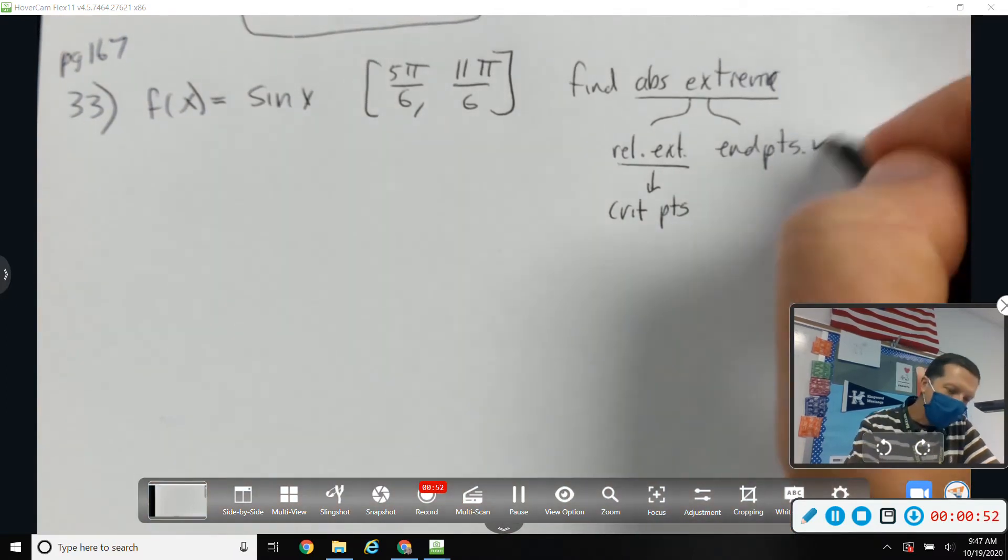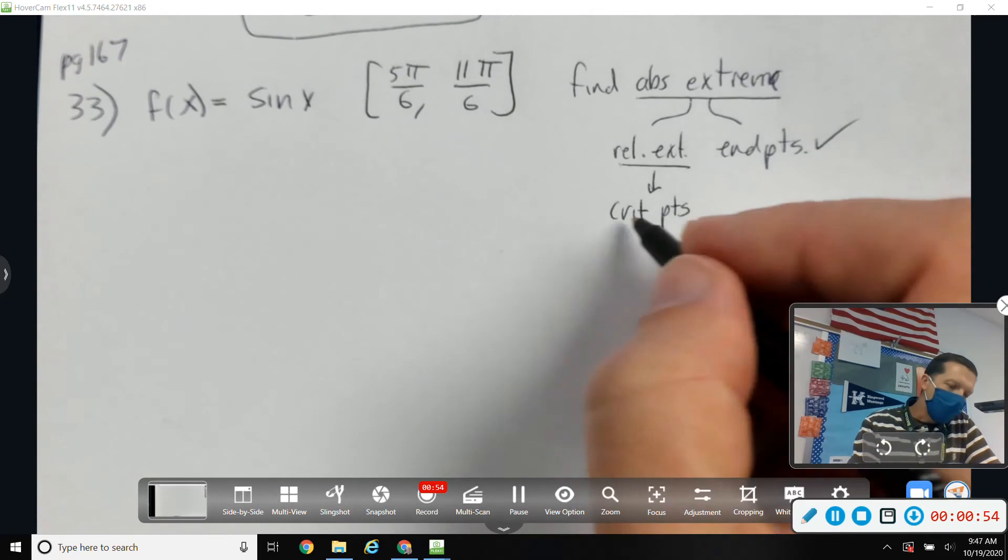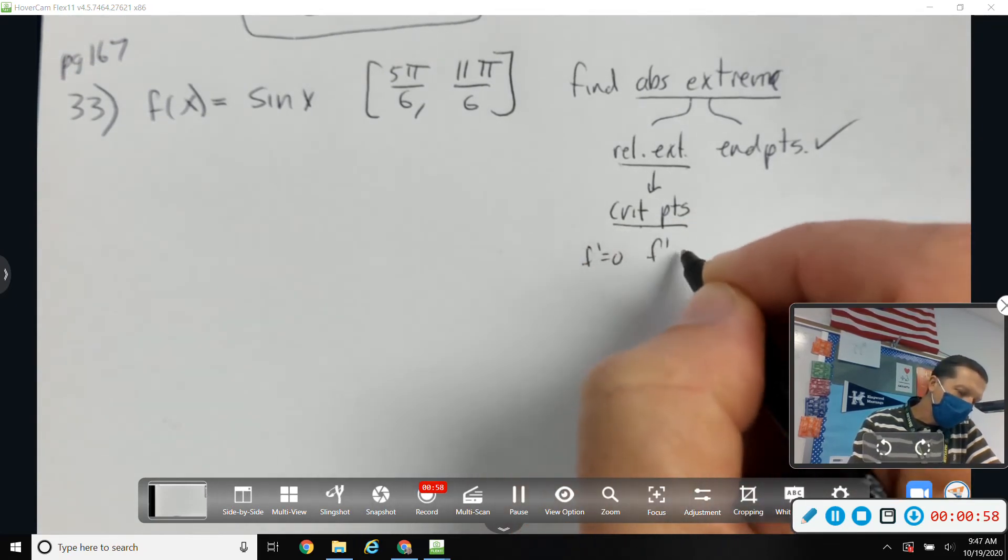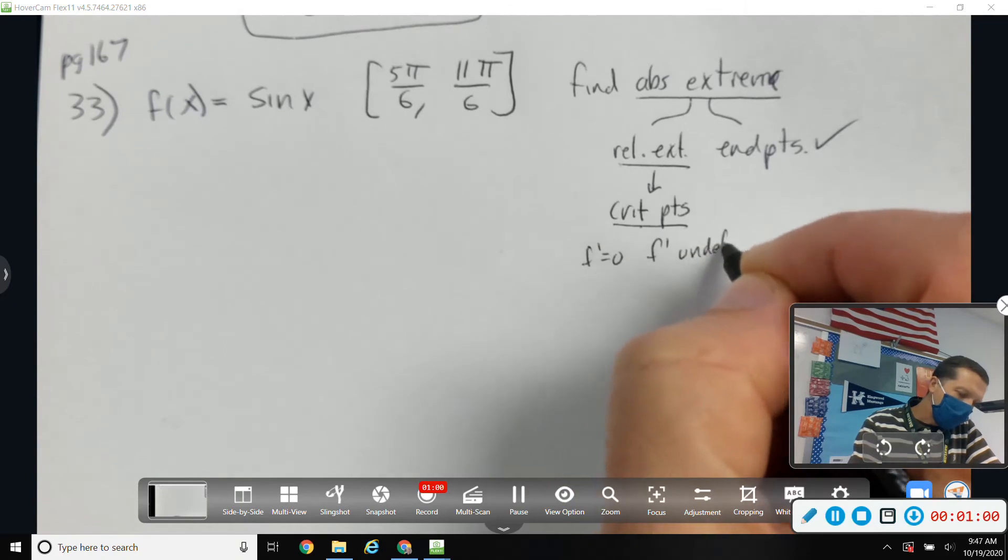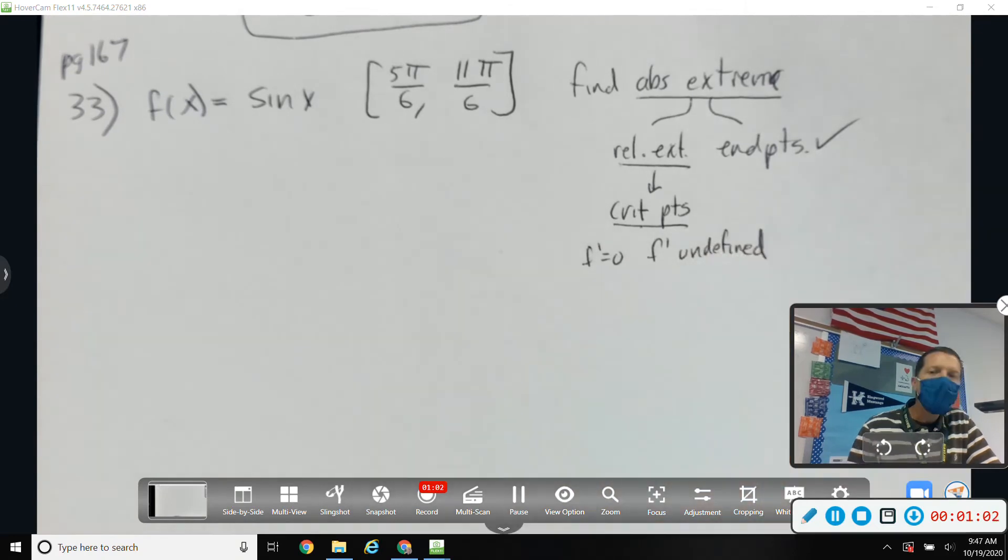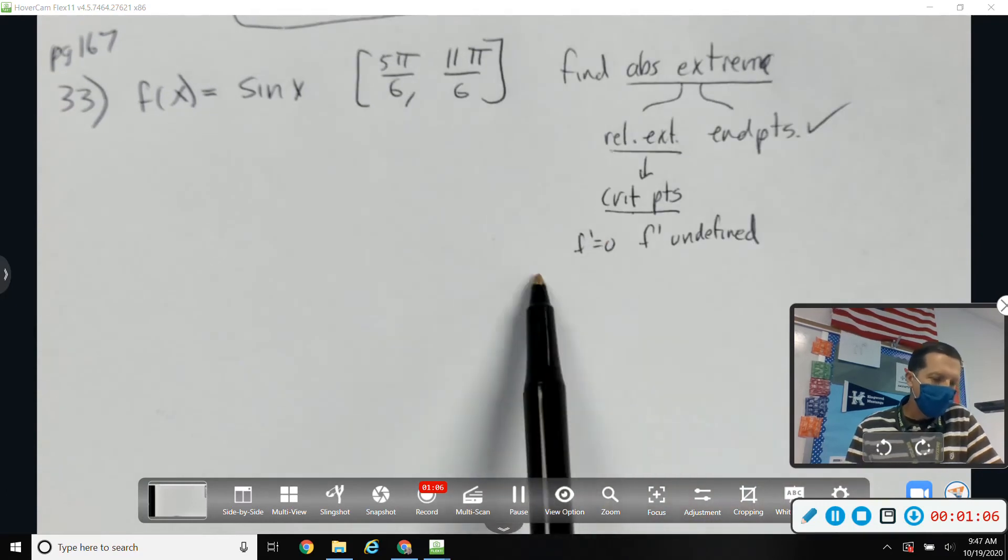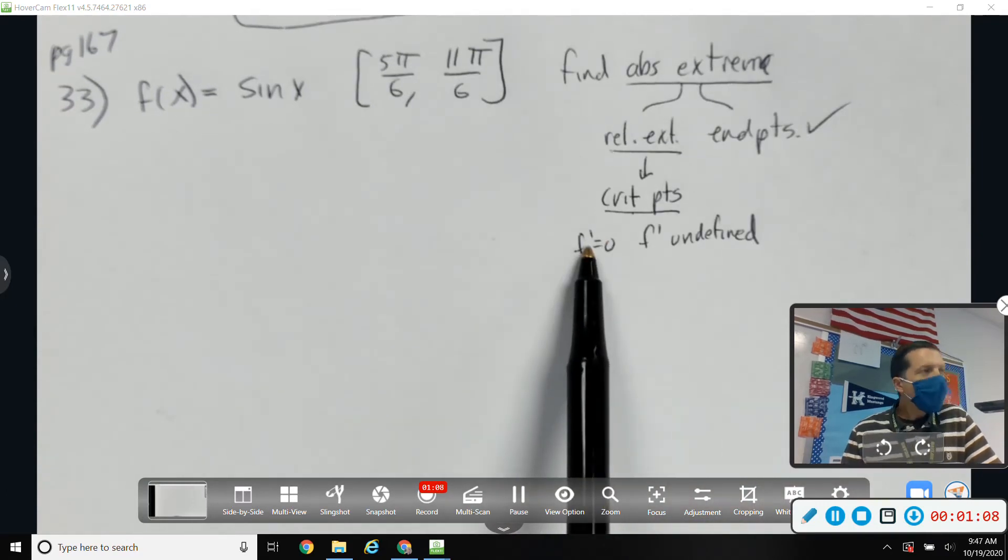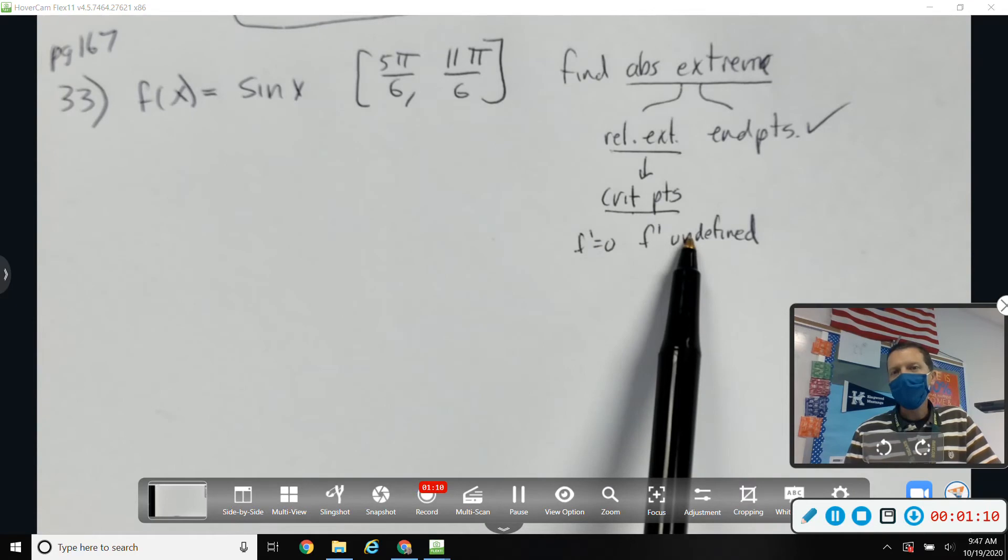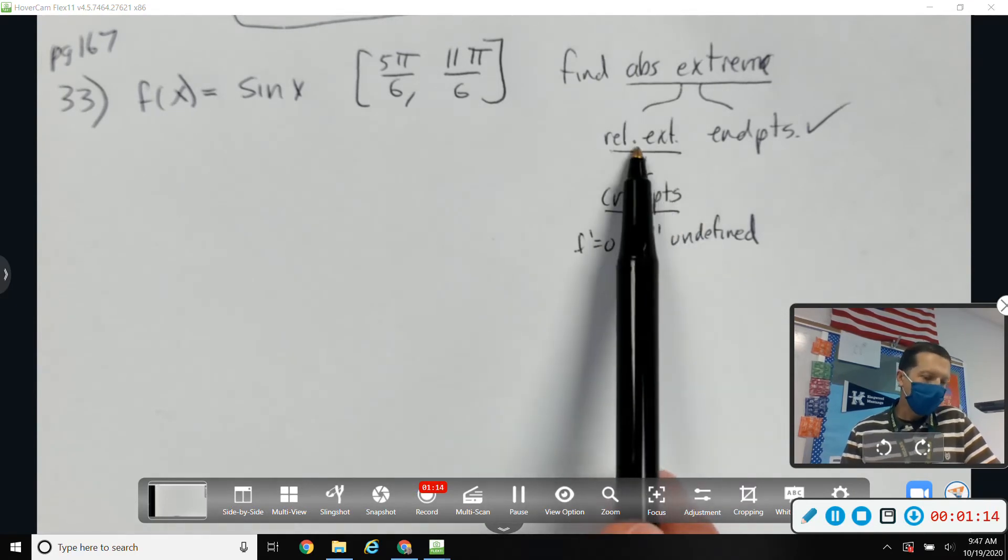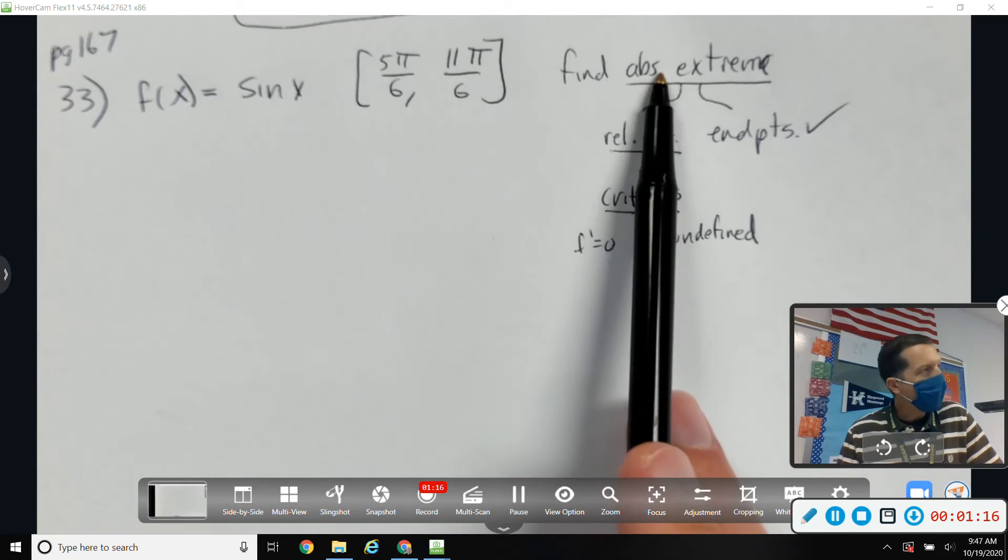So the endpoints they gave us, that's easy. The critical points are where f prime is zero or f prime is undefined. So the roadmap to this problem: I need to take a derivative, figure out where it's zero, where it's undefined, that'll tell me my critical points, which might be relative extrema, and those might be absolute extrema.